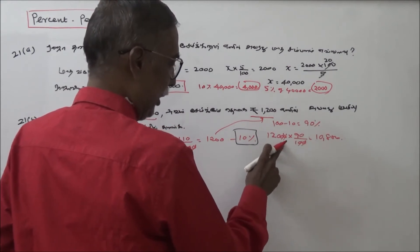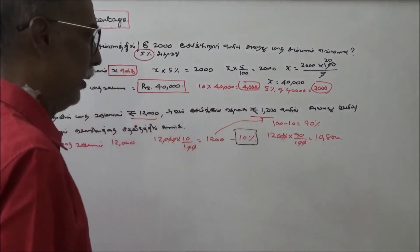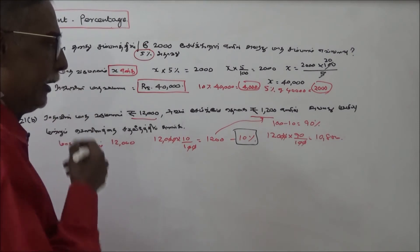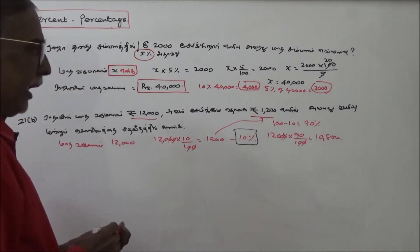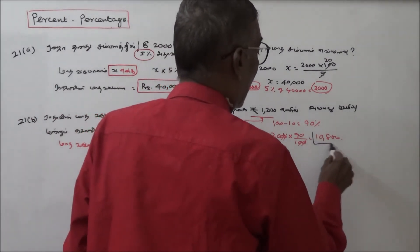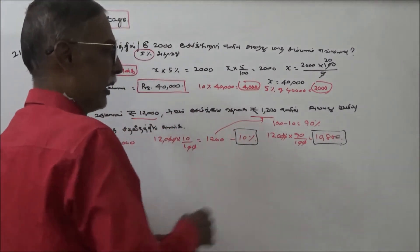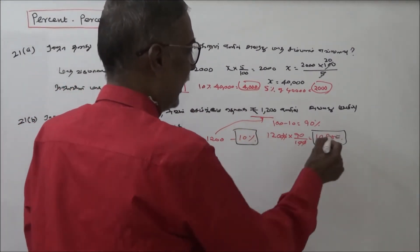To verify: 120 into 90 equals 10,800 rupees. That's the answer.